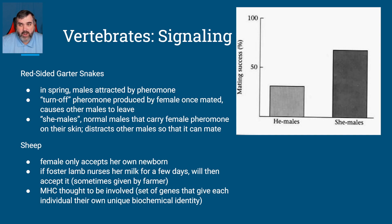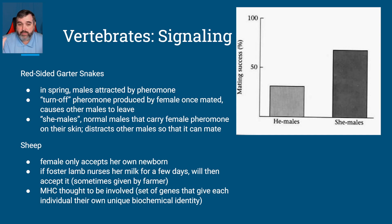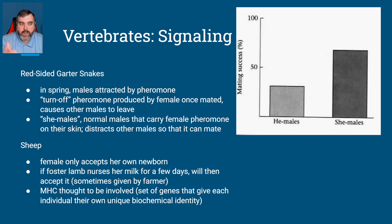Red-sided garter snakes: in the spring, the male is attracted by pheromones. There's also a turn-off pheromone eventually emitted by the female saying she's mated and the other males should leave her alone. But there are also what they call she-males. This is a scientific term — these are normal males in all ways, but they carry the female pheromone on their skin. That pheromone signals that the female is mated, so other males leave. She-males have much bigger mating success because they're deterring the other males from mating.